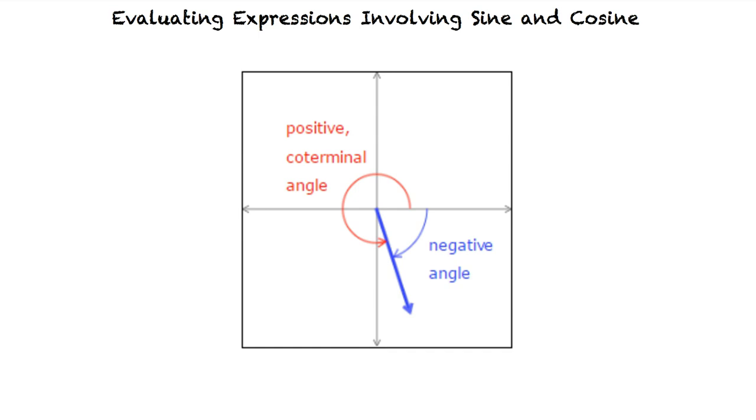What is the coterminal angle? Let's say that this negative angle is negative π/3. Its coterminal angle would be positive 5π/3. They are called coterminal angles because negative π/3 and positive 5π/3 share the same terminal side.